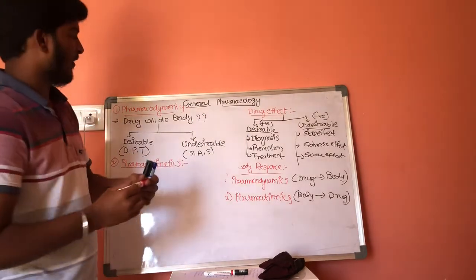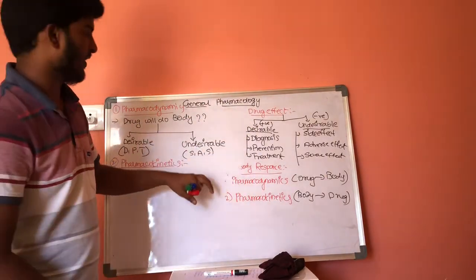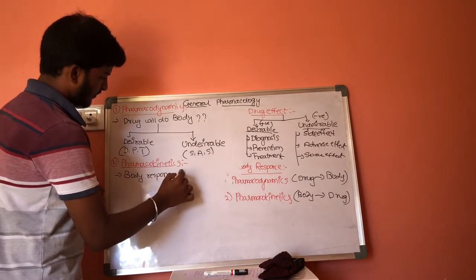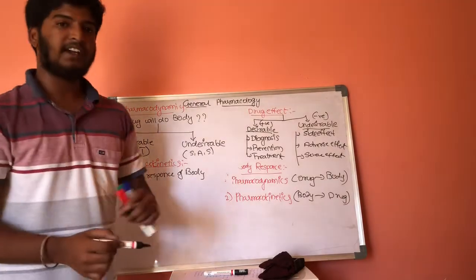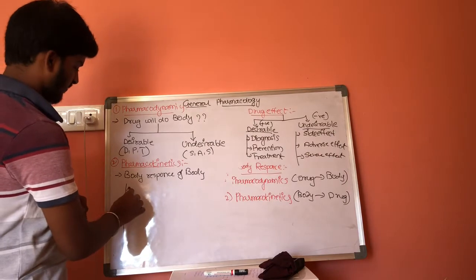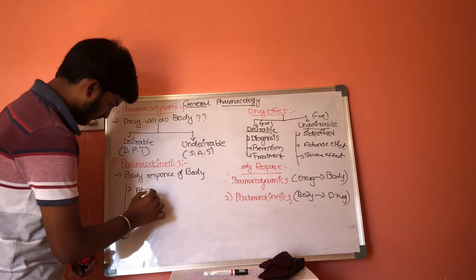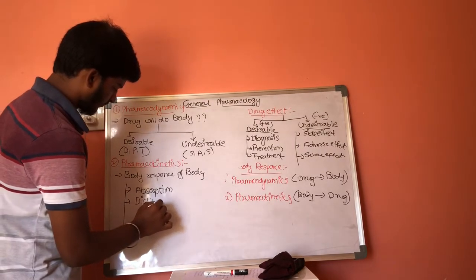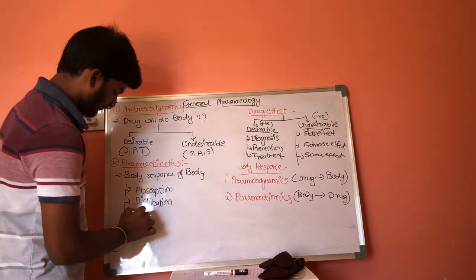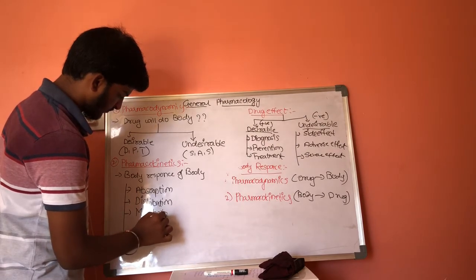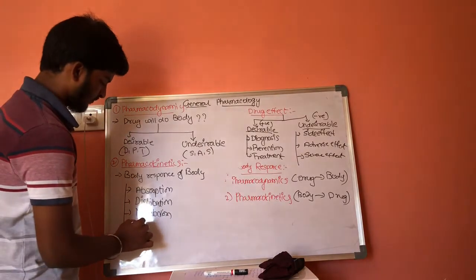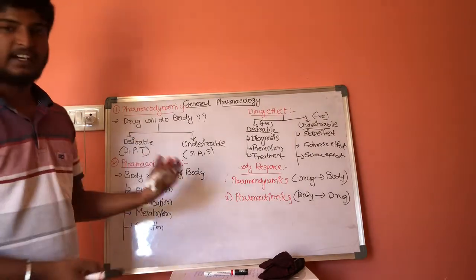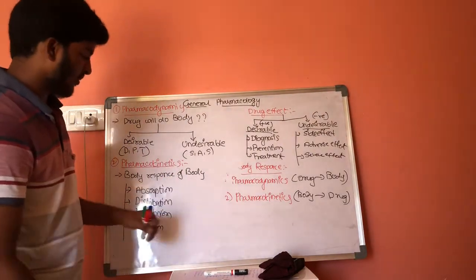Pharmacokinetics is a branch of pharmacology which explains how the body responds towards the drugs. Pharmacokinetics includes four subdivisions: first, absorption; second, distribution; third, metabolism; and fourth, excretion or elimination. Whenever a drug enters our body, the body shows four types of responses: absorption, distribution, metabolism, and excretion.